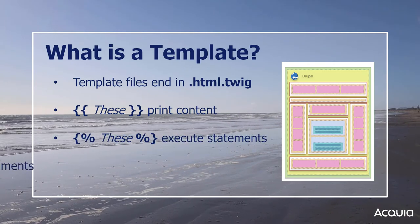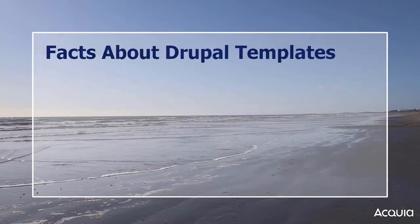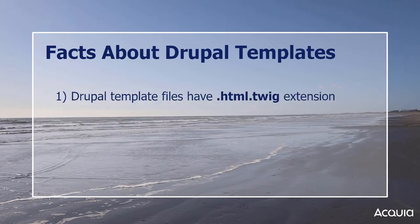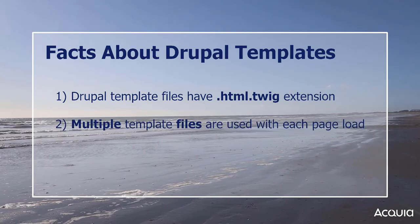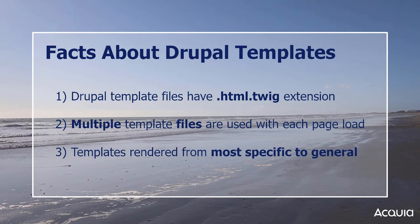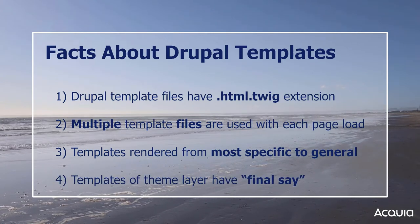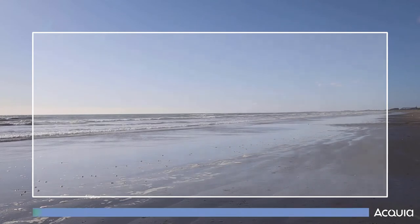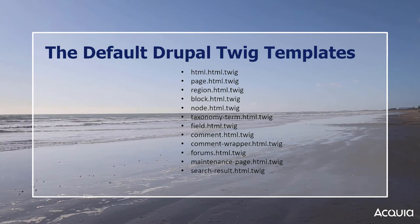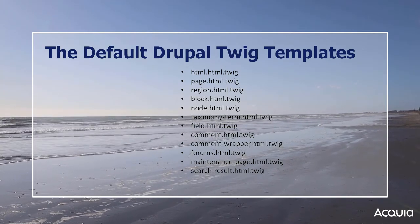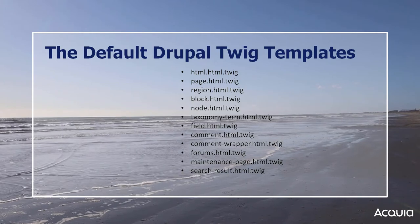Here are some key facts about theming in Drupal. Template files have an extension of .html.twig. Multiple template files are used for each page load. Drupal reads nested templates from the most specific to the most general, and any templates in the theme layer have the final say. Templates are broken down into files addressing specific areas of Drupal, so if you want to change a specific part of the HTML, you don't have to wade through lines and lines of markup to find the right spot.